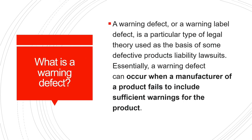What is a warning defect? A warning defect, or warning level defect, is a particular type of legal theory used as the basis of some defective products liability lawsuits. Essentially, a warning defect can occur when a manufacturer of a product fails to include sufficient warnings for the product.